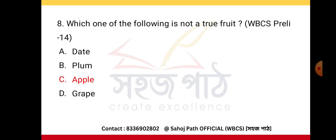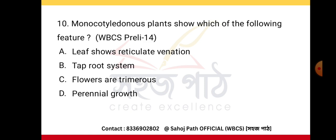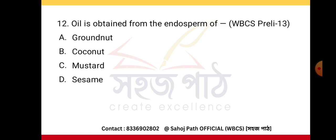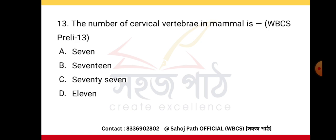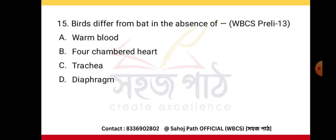AIDS is caused by a virus. Monocotyledon plant flowers are trimerous. In angiosperms, triple fusion is required for the formation of endosperm. Oil is obtained from the endosperm of coconut. The number of cervical vertebrae in mammals is seven.